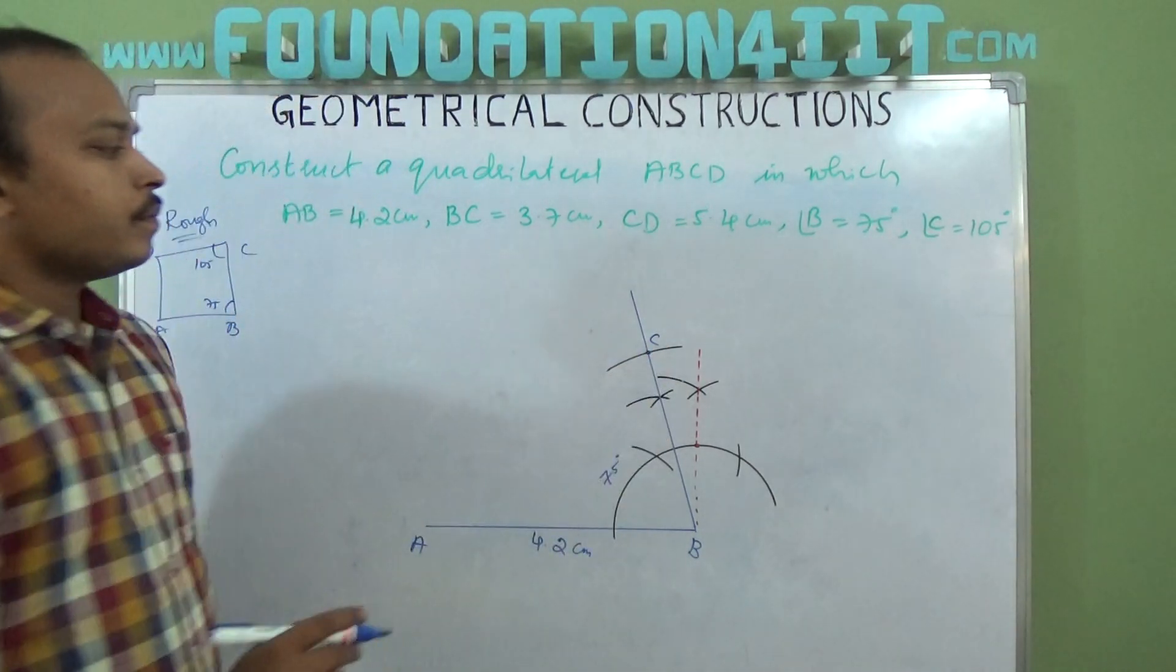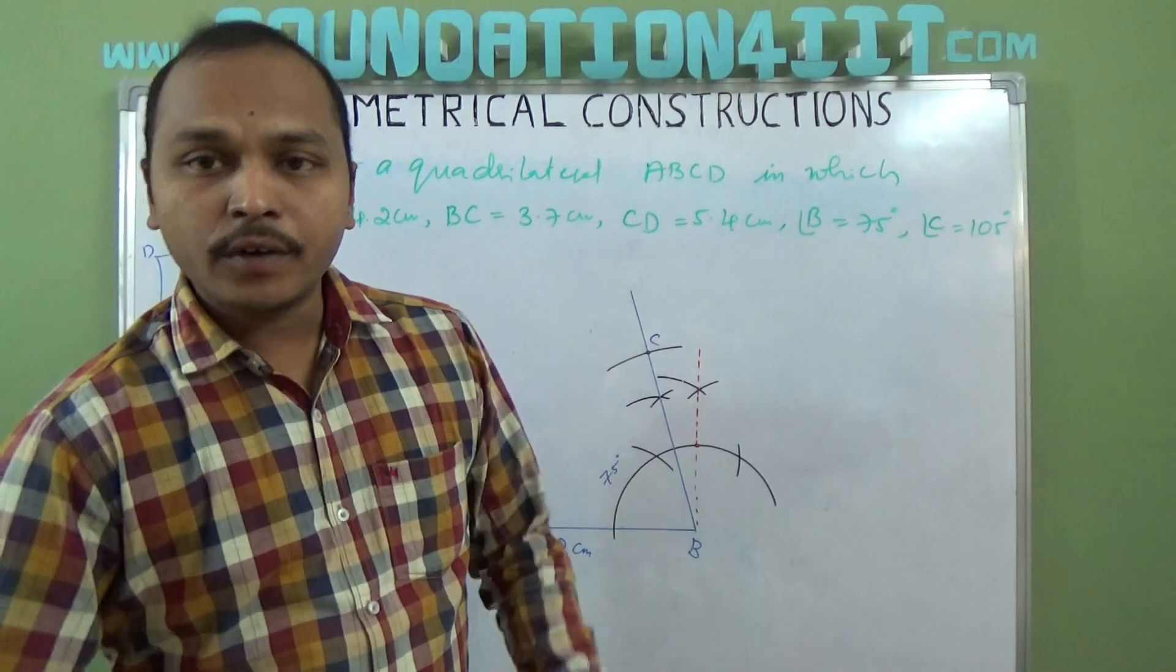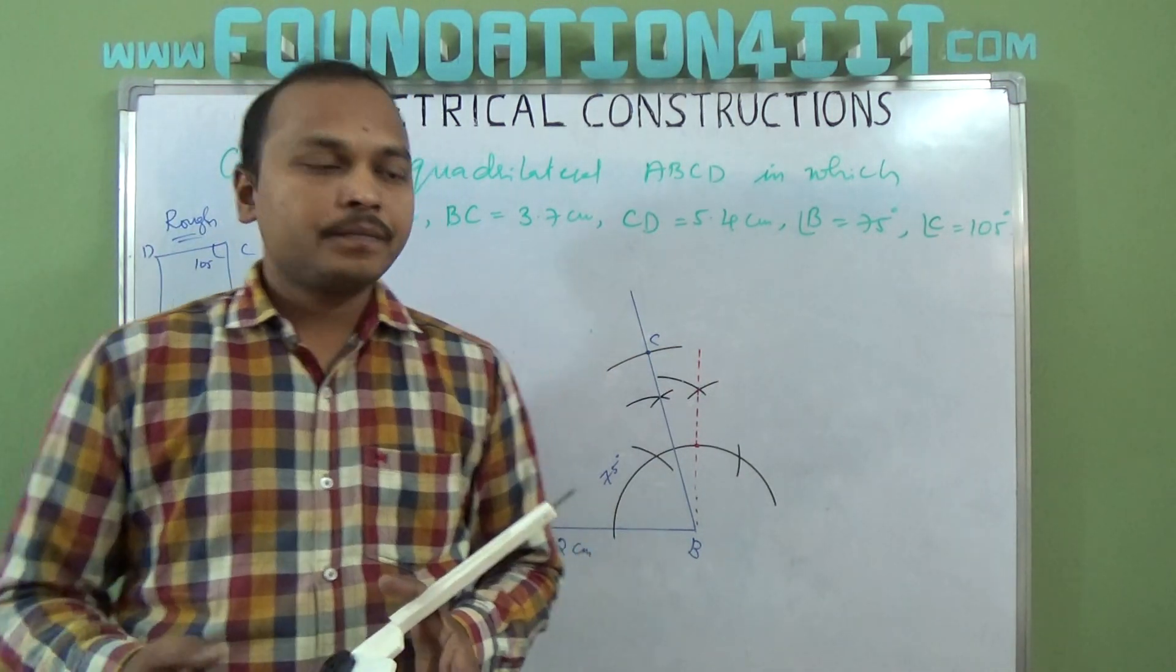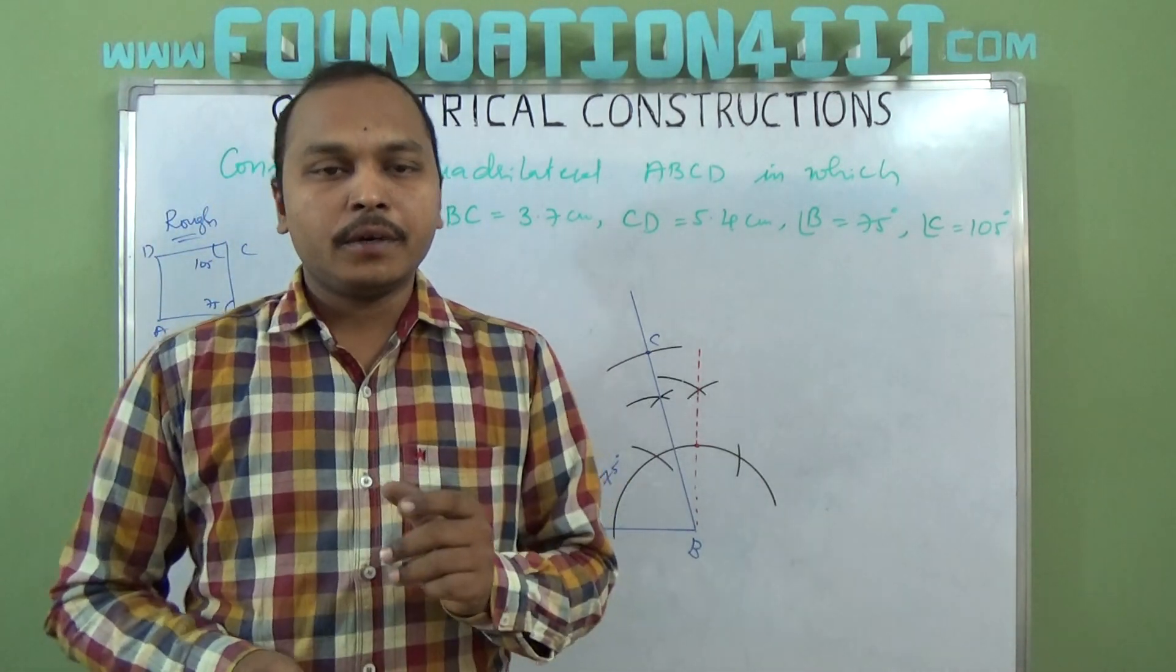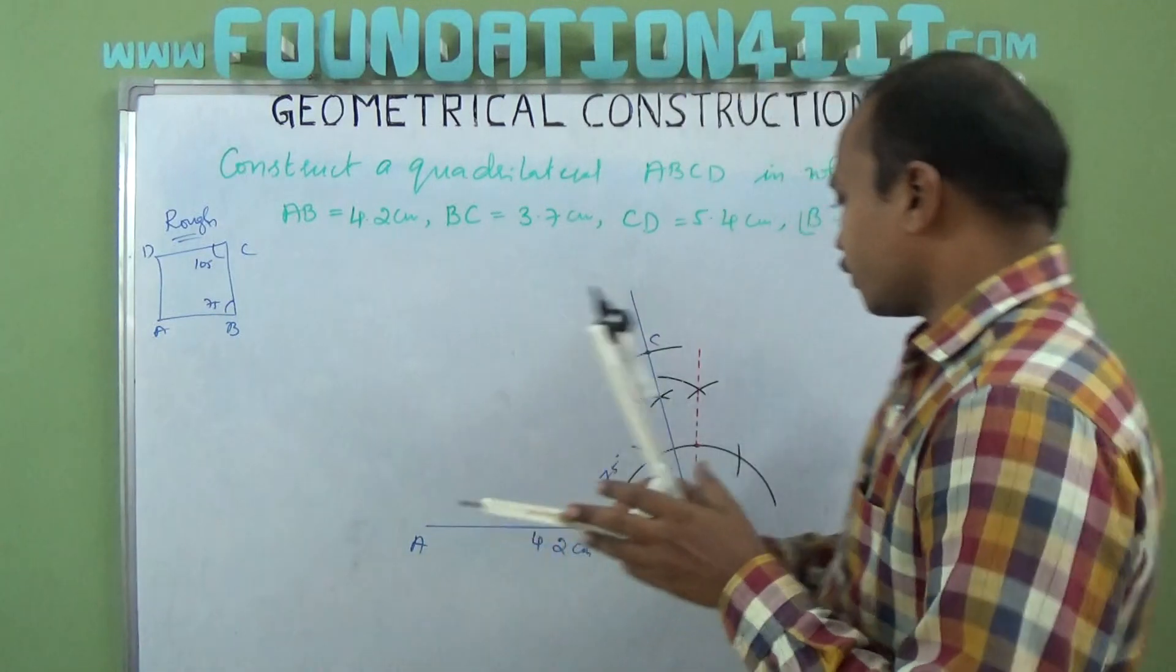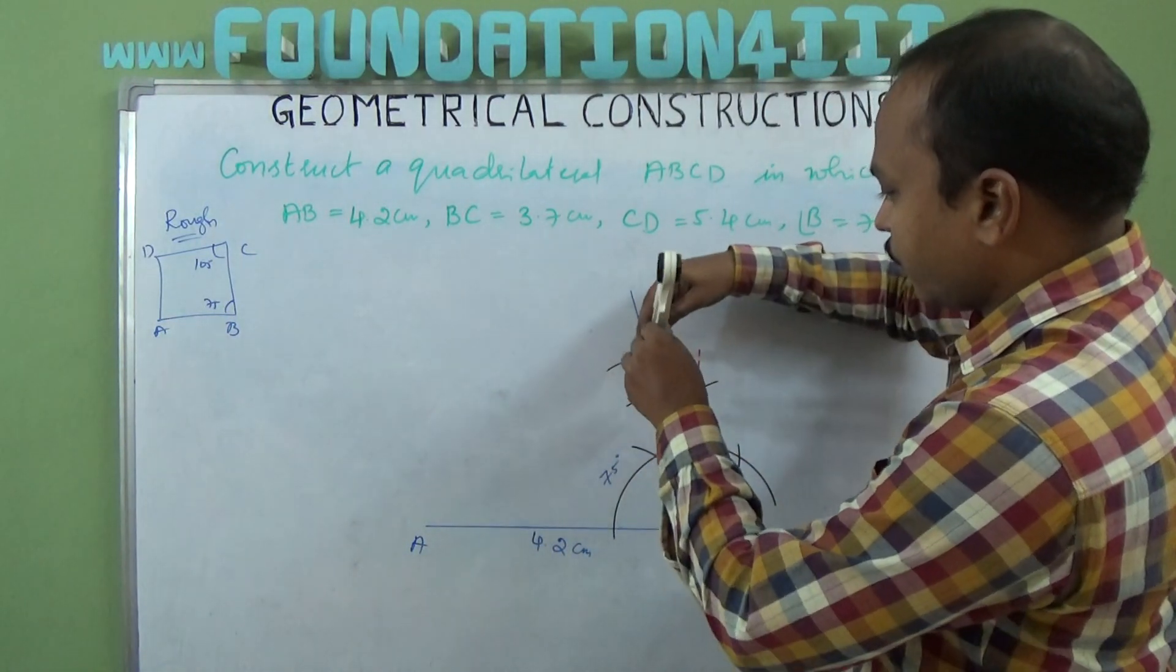This is C now. Now angle C is 105 degrees. If you observe, 105 is 90 plus 15, so between 90 and 120, 105 will come. So 60 and 120 you should construct first. At angle point C I'm going to construct.